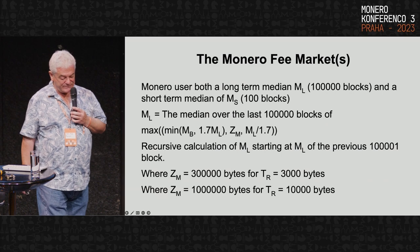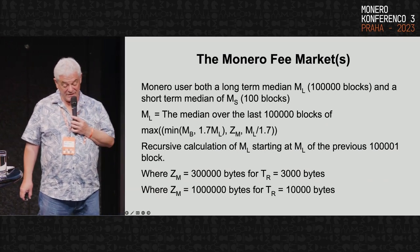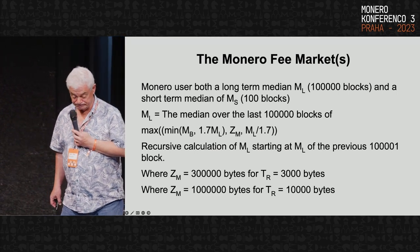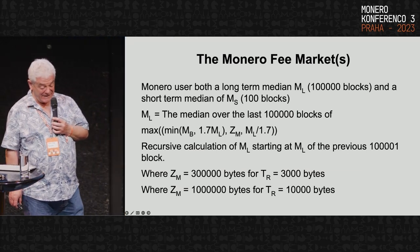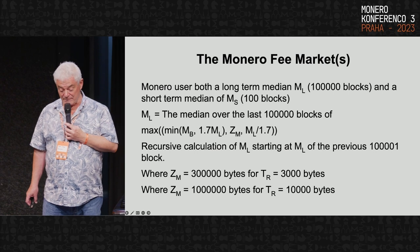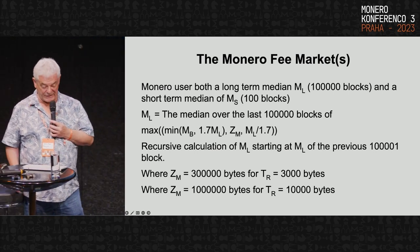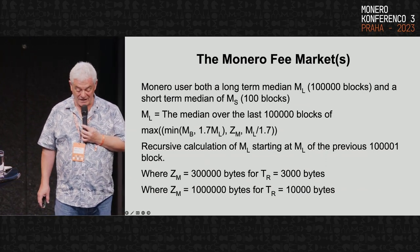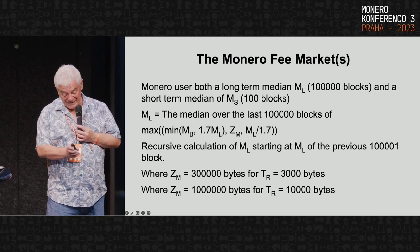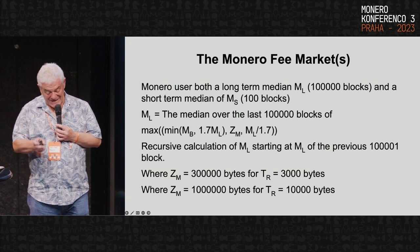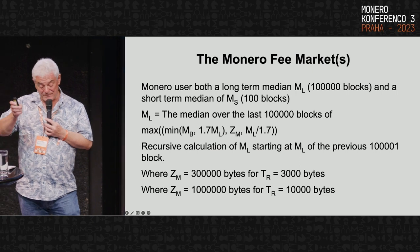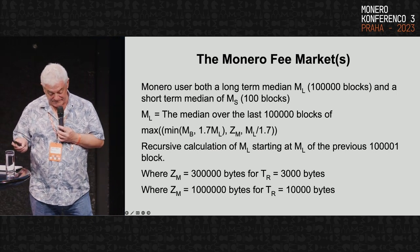Monero uses a long-term median ML over 100,000 blocks and a short-term median MS over 100 blocks — these are two-minute (120-second) blocks. MB is your block size. The formula is a recursive calculation: MS equals the minimum of the block size and 1.7 × ML (so it's self-capping), and you maximize the higher of your minimum block size ZM and the base (ML / 1.7), providing stability.